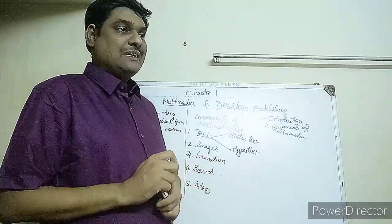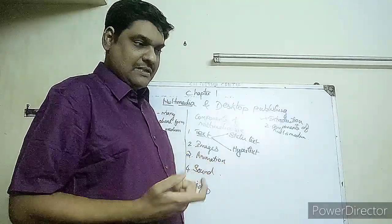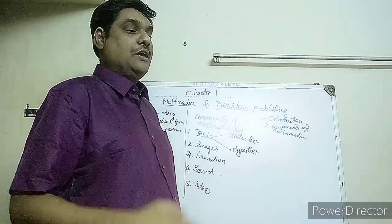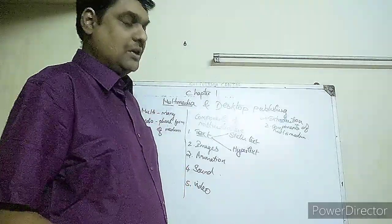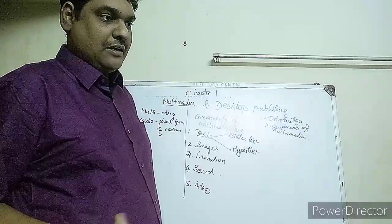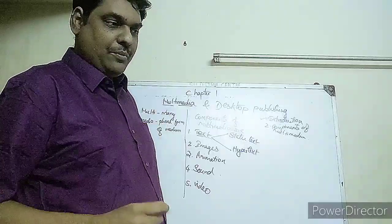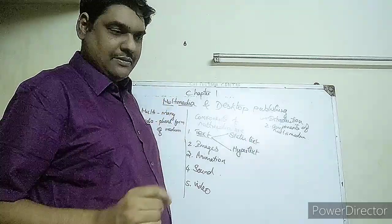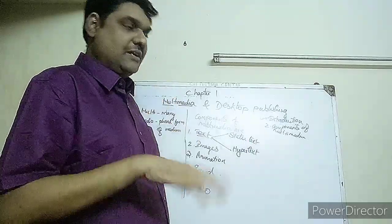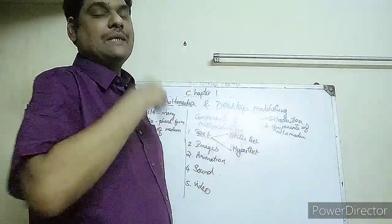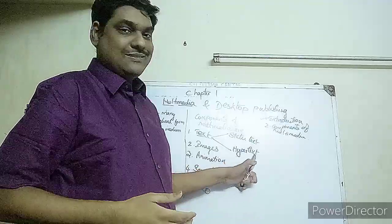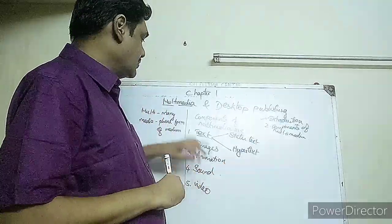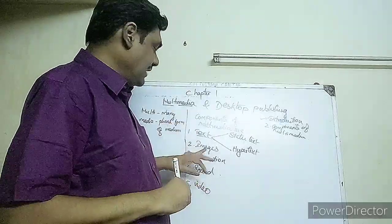The next type is hypertext. Hypertext is a text which contains some special words, and when you click on that special word it gives you some other information. As we see on the internet — when you Google for information you get a page, and there will be some blue linked words. If you click on those, it will show you another page. That kind of text is called hypertext.